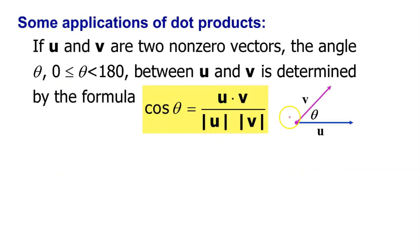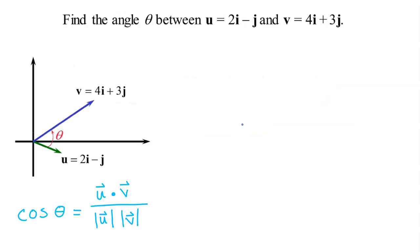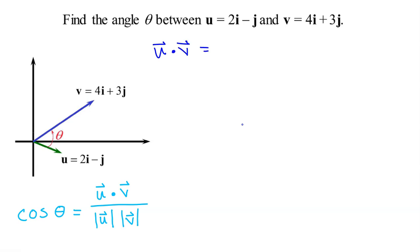We can use dot product to find the angle between two vectors using this formula. The cosine of the angle between two vectors U and V will be the dot product of U and V divided by the product of the magnitudes of U and V. For example, given vectors U and V, to find the angle between them I would start by finding the dot product of U times V. That would be 2 times 4 plus negative 1 times 3, which is 8 minus 3, giving 5.